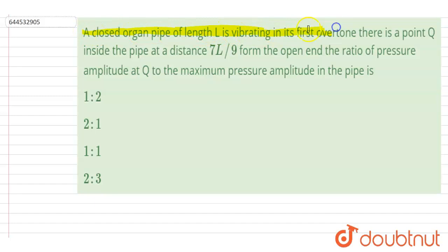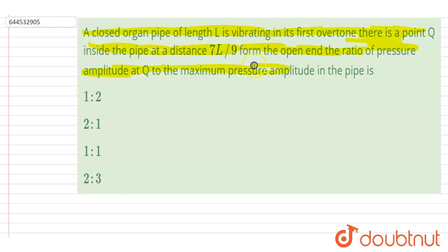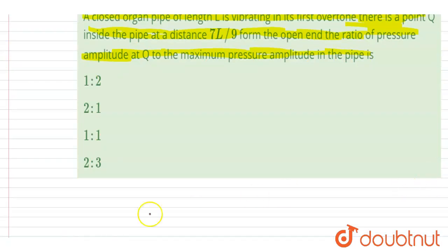Hello everyone. A closed organ pipe of length l is vibrating in its first overtone. There is a point Q inside the pipe at a distance 7l/9 from the open end. We need to find the ratio of the pressure amplitude at Q to the maximum pressure amplitude in the pipe.